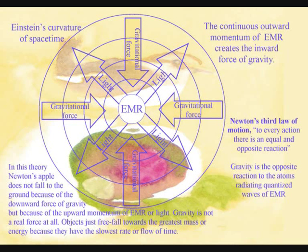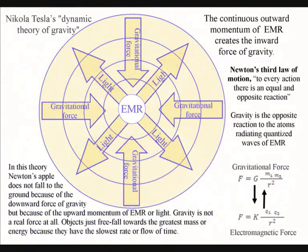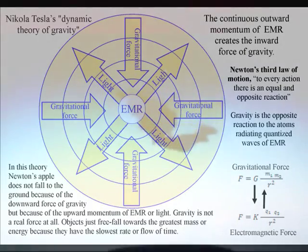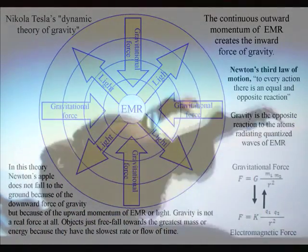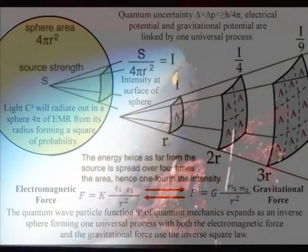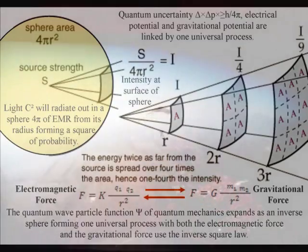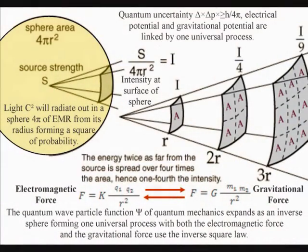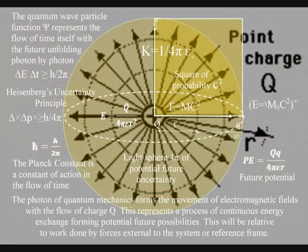Therefore, Newton's universal law of gravity is part of this process. In this theory, Newton's apple does not fall to the ground because of the downward force of gravity, but because of the upward momentum of electromagnetic radiation or light. Gravity is not a real force at all. It is a secondary force to the electromagnetic force. Objects just freefall towards the greatest energy because it has the slowest rate of time, or the greatest time dilation. I believe this can be seen in the mathematics, with both the gravitational force and the electromagnetic force having the inverse square law.